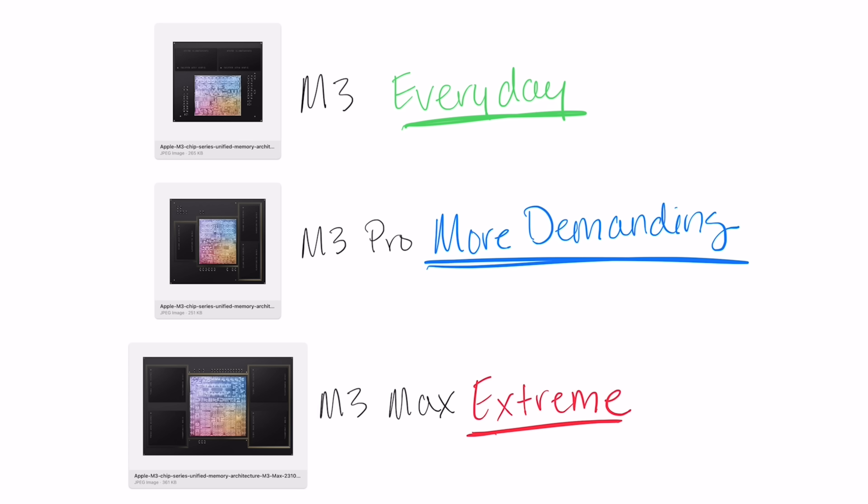Then we'll move on to talking about what things like CPU, GPU, cores, neural engine, ray tracing, caching, and all of that stuff means — just in case you want to go further and understand what you're actually paying for. Here's how I would break this down in terms of workflows: the M3 is great for everyday workflows, the M3 Pro is great for more demanding workflows with more multitasking, and the M3 Max is for extreme workflows.